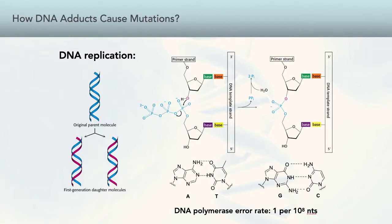So how do these structurally modified bases cause mutations? During normal DNA replication, bases are added to the growing chain of DNA with very high accuracy according to the Watson-Crick base pairing rules — A opposite T and G opposite C. However, because their molecular shape and hydrogen bonding properties differ from those of native bases, DNA adducts may not obey the Watson-Crick base pairing rules.